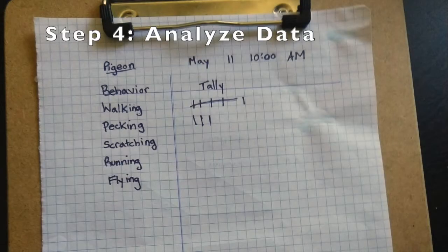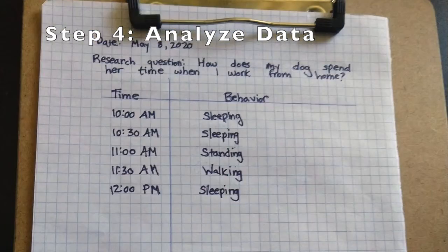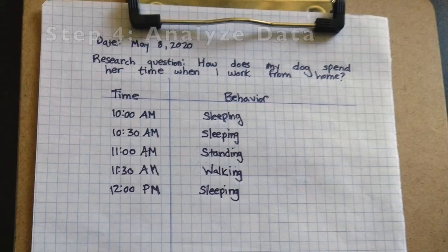Your last step is to analyze your data. Take a look at your data — what did you learn? We saw that the pigeon mostly walked around and sometimes pecked, and that my dog usually sleeps during the day. If we record data for a longer period of time, we'll have an even better understanding of how these animals spend their days.